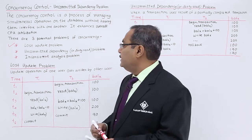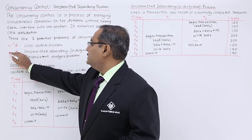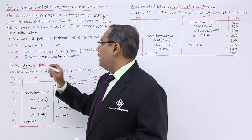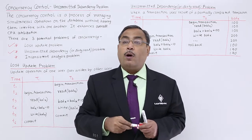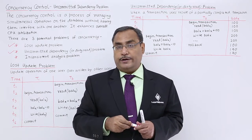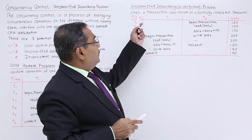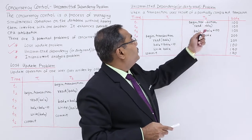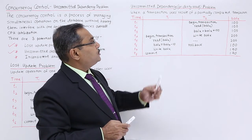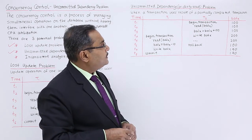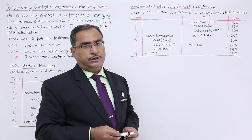Now in this session, we are discussing uncommitted dependency problem and dirty read problem. The question coming to mind is: what is a dirty read? Uncommitted dependency or dirty read problem means when a transaction uses the result of a partially completed transaction.